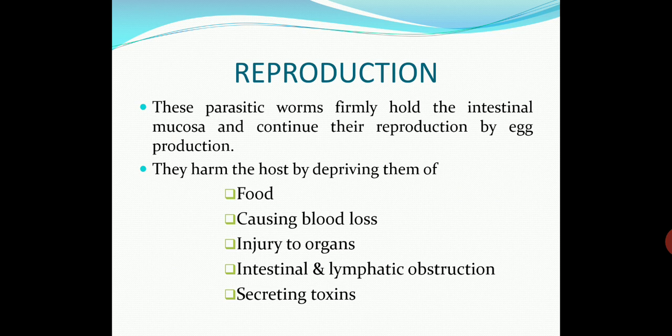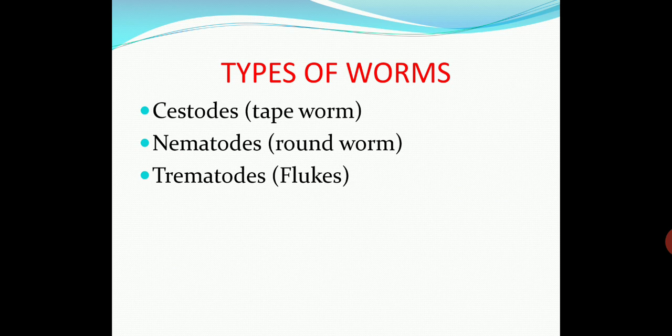These parasitic worms firmly hold the intestinal mucosa and continue their reproduction by egg production, leading to the further formation of new eggs which could be harmful for the body. They harm the host by depriving them of food, causing blood loss, injury to organs, intestinal and lymphatic obstructions, and secreting toxins. These are all the effects that can be observed with helminths.